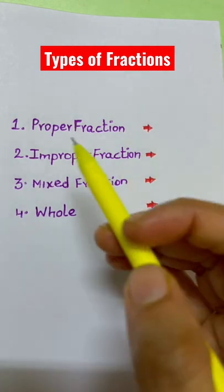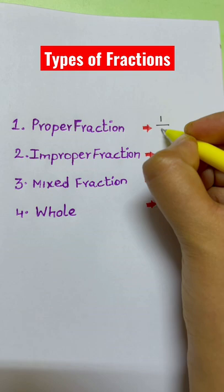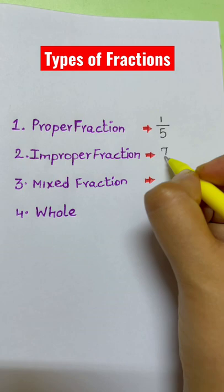A proper fraction is a fraction whose numerator is less than the denominator. An improper fraction is a fraction whose numerator is greater than the denominator.